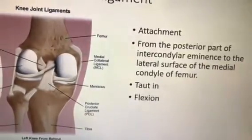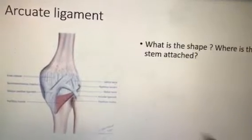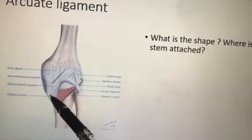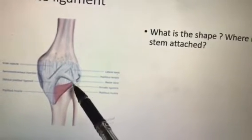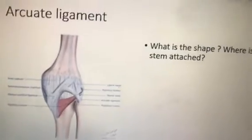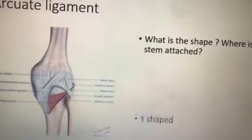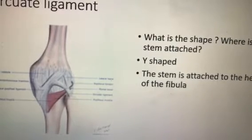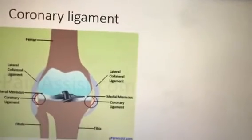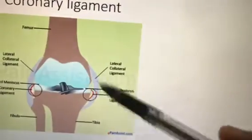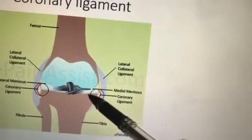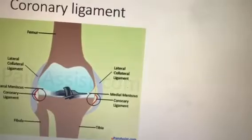The PCL is taut during flexion. The arcuate ligament is Y-shaped, and the stem of the Y is in the head of the fibula. The coronary ligament is the connective tissue connecting the menisci to the capsule — you have two coronary ligaments, one for each meniscus.